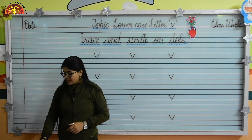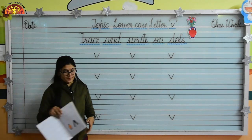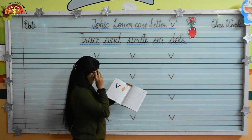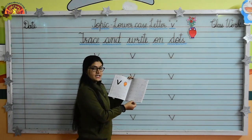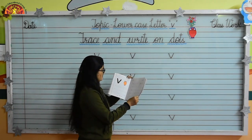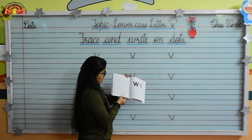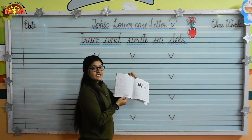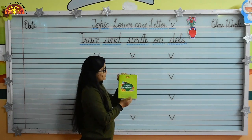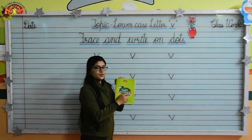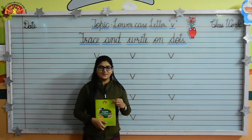So kids, in this way you have to complete pages 72, 73, and 74 in your English workbook 2. Thank you so much. Have a nice day.